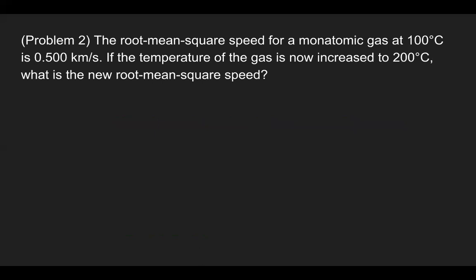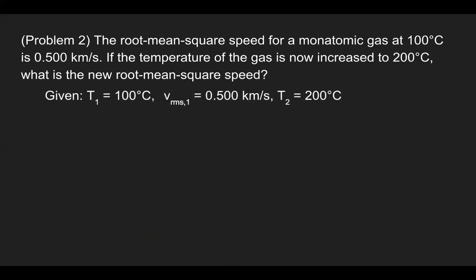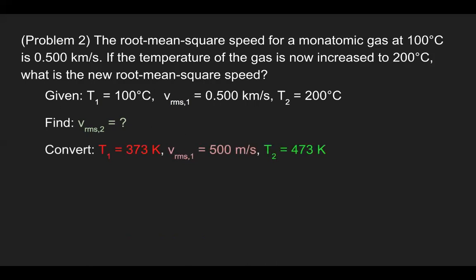For Problem 2, the root mean square speed for a monatomic gas at 100 degrees Celsius is 0.5 kilometers per second. If the temperature is now increased to 200 degrees Celsius, what is the new root mean square speed? We'll consider two scenarios: scenario one at 100°C with RMS speed 0.5 km/s, and scenario two at 200°C. Before we begin, we convert all values to standard SI units to stay consistent and avoid mistakes.